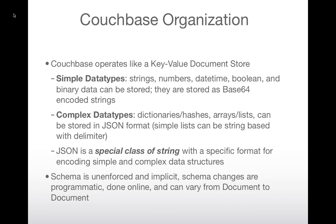If you're doing integrations with Facebook or Twitter — which is quite common with social login — they're giving you JSON, and you can just store that JSON straight into Couchbase without creating a complex nested schema across many tables and joins. You can literally take the JSON from Facebook and stuff it into Couchbase without any work. It saves a lot of time not having to create that schema.